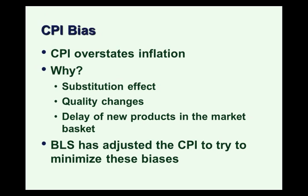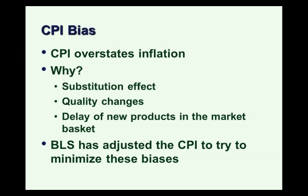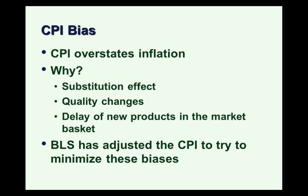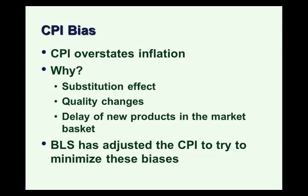The BLS over time has taken many steps to adjust the CPI to minimize these biases. The CPI is generally believed to overstate inflation, but some argue it even understates inflation for certain groups. For example, the elderly might argue that the CPI doesn't put enough weight on healthcare. If elderly households spend a lot more on healthcare, the CPI might not pick up their true cost of living increase, because healthcare costs tend to rise faster than the prices of other goods and services. So this is really only going to be an estimate of the average level of prices.